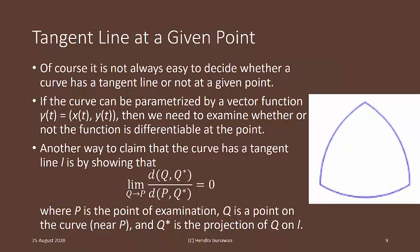then we need to examine whether or not the function is differentiable at that point. Another way to claim that the curve has a tangent line L is by showing that the limit of the distance between q and q star divided by the distance between p and q star, where q tends to p, is equal to 0. Where p is the point of examination, q is a point on the curve near p, and q star is the projection of q on L.